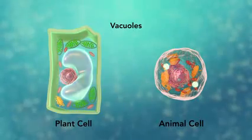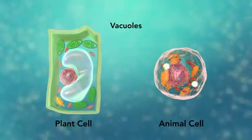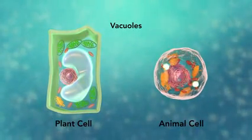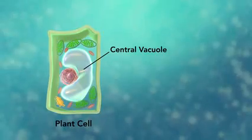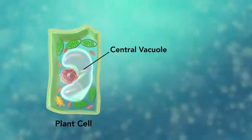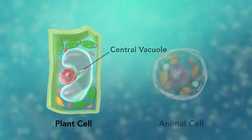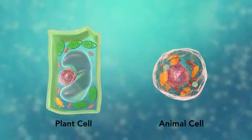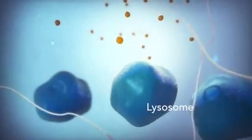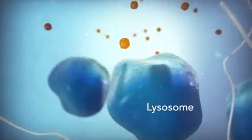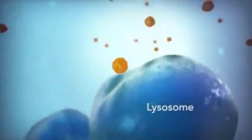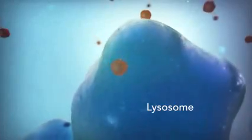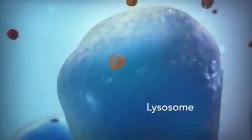Vacuoles are sac-like structures that store different materials. Here in this plant cell, the central vacuole stores water. Going back to the animal cell, you will see an organelle called a lysosome. Lysosomes are the garbage collectors that take in damaged or worn-out cell parts. They are filled with enzymes that break down this cellular debris.